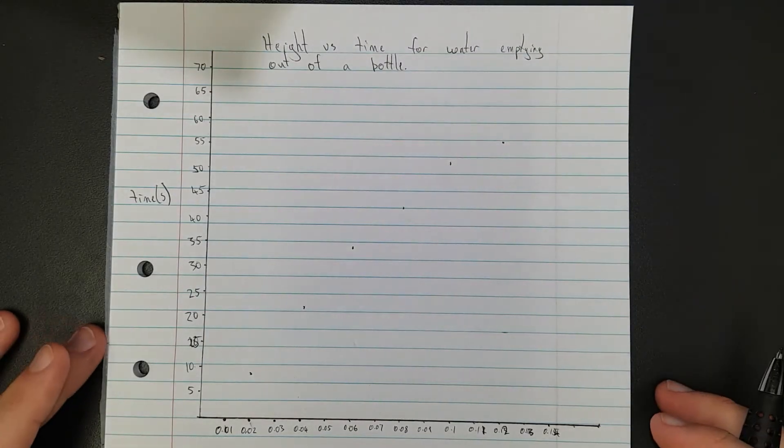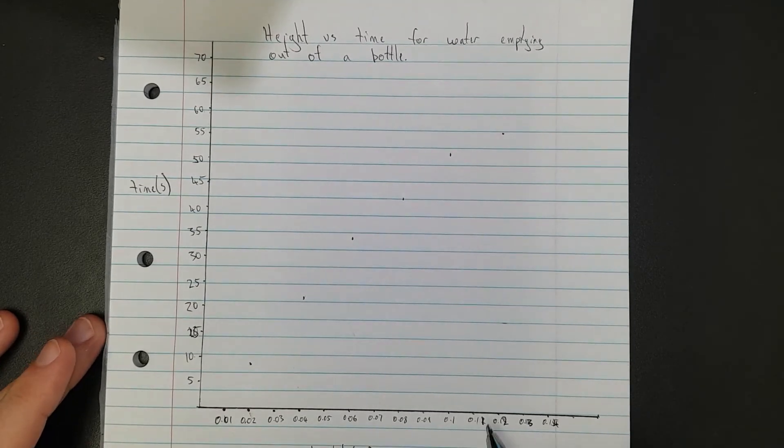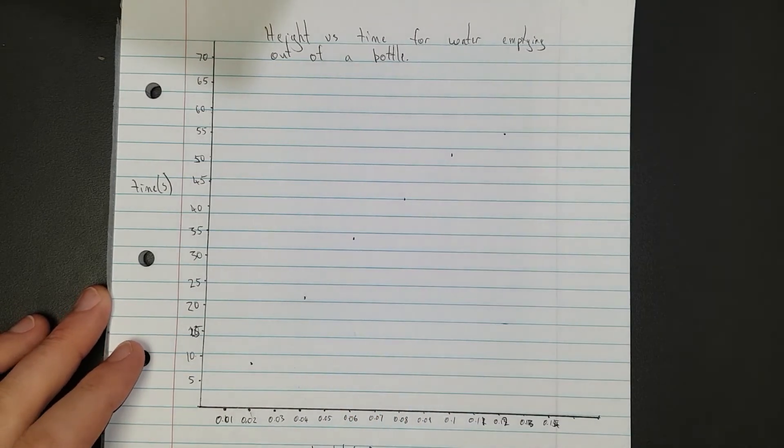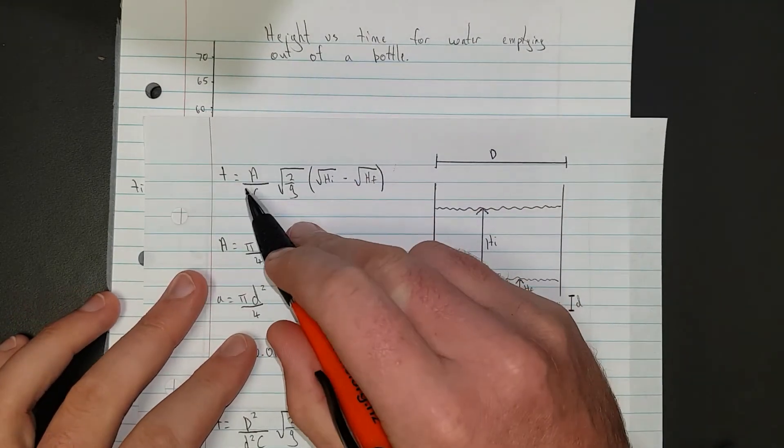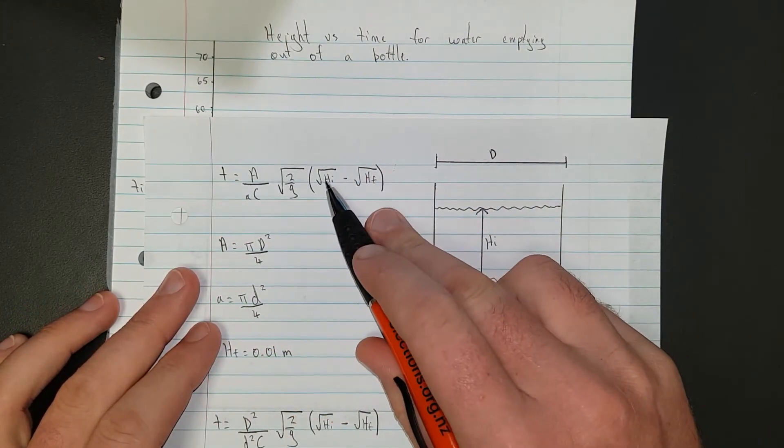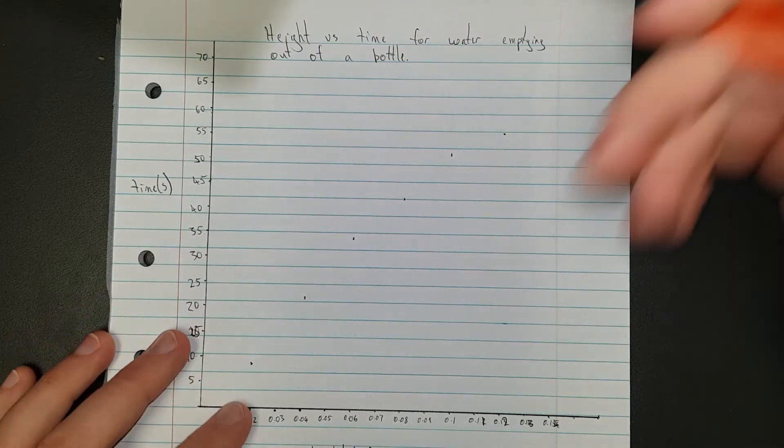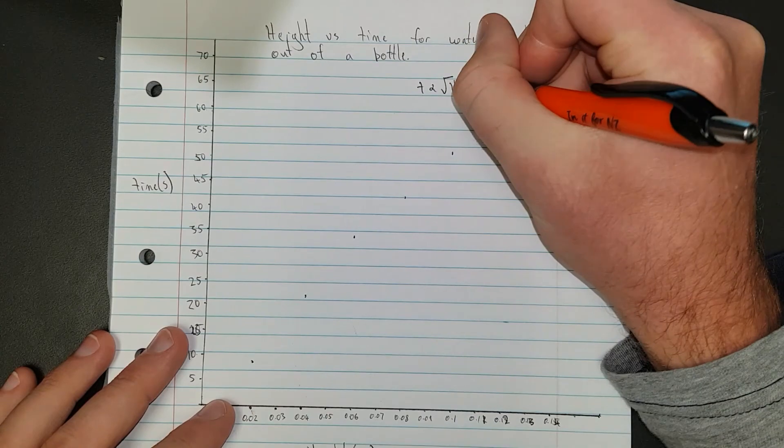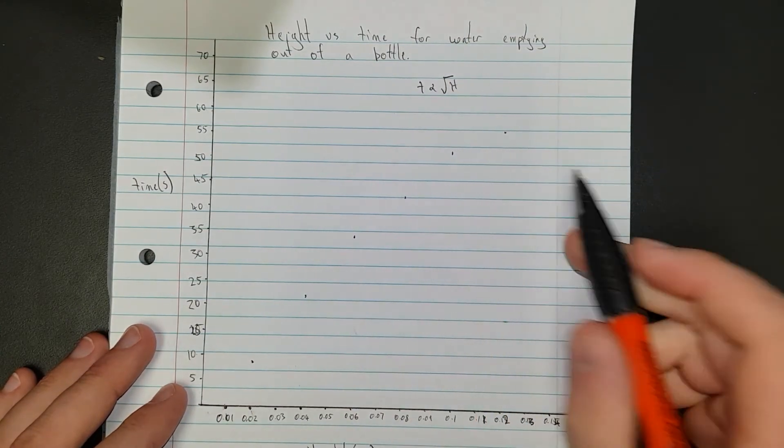As you can see I've plotted my graphs. I did make a mistake down here - it's 0.01 then 0.11, not straight to 0.2. You can see it starts to curve off a bit. If we go back to our formula, time is proportional to the square root of h.